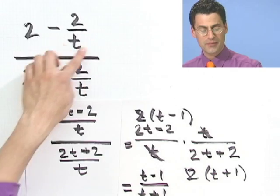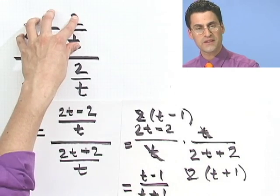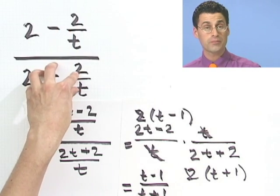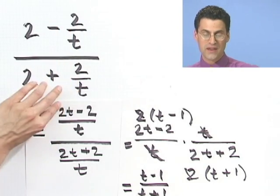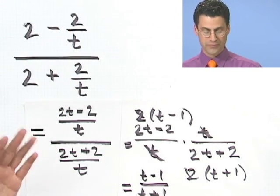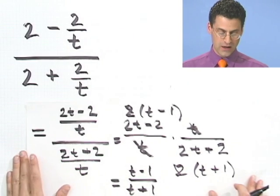So this is one way of doing it: just getting a common denominator, combining fractions, making it one big fraction on top and one big fraction on the bottom, and then inverting and multiplying. That will work.